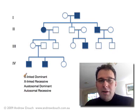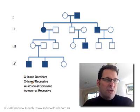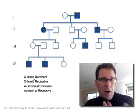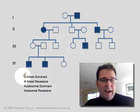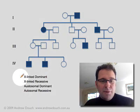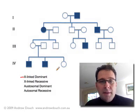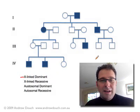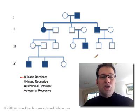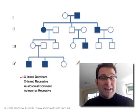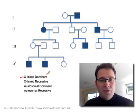The way we're going to do this is take each one of these modes of inheritance and use it as a sort of hypothesis. We'll do them one by one. We're going to assume that this pedigree is showing a trait inherited as an X-linked dominant trait.